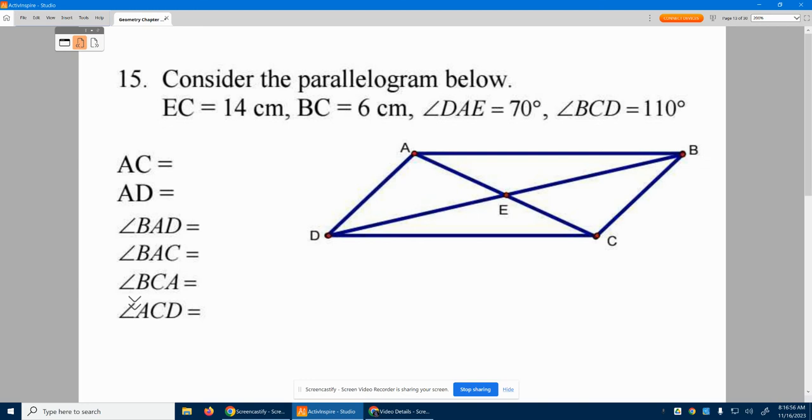Alright, number 15. Consider the parallelogram below. It says EC is 14, so we know this leg right here is 14. What do we know? If that's 14 right there, this right here is what? 14. So we have 14 and 14. I know AE has to be 14 also.